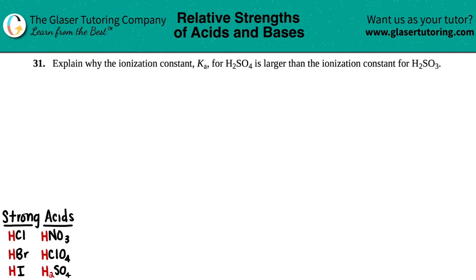Number 31, explain why the ionization constant Ka for H2SO4 is larger than the ionization constant for H2SO3.